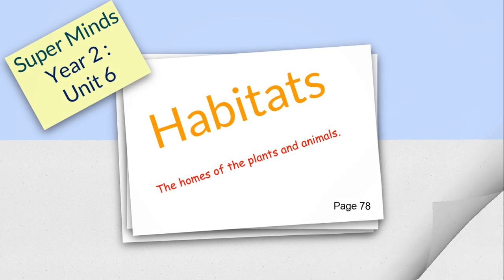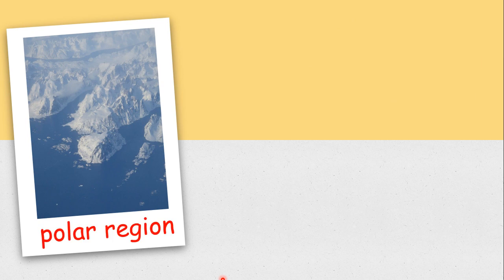Let's look at the first picture. Do you know what is this? This is the polar region. The polar regions are located in the very north and very south of the globe. It is nearly always frozen.